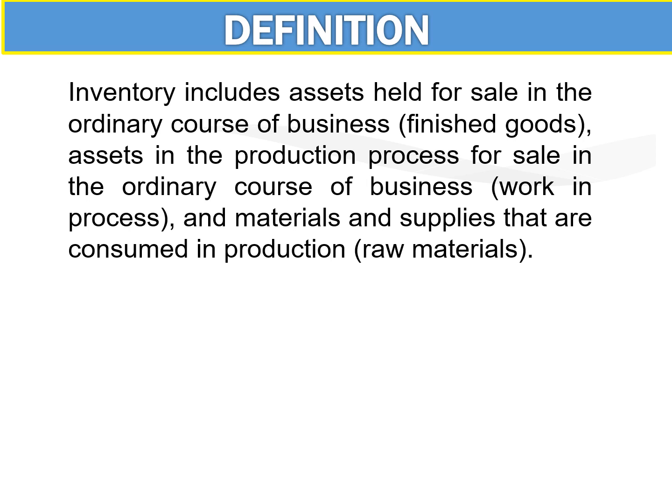Assets in the production process for sale in the ordinary course of business — for example, if you are into processing, like selling RTW clothes. When the clothes are not yet finished, these are so-called under production, also called work-in-process. We also have supplies and materials that are consumed for production, like the yarn or the cloth.